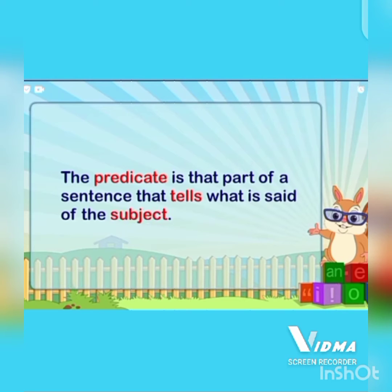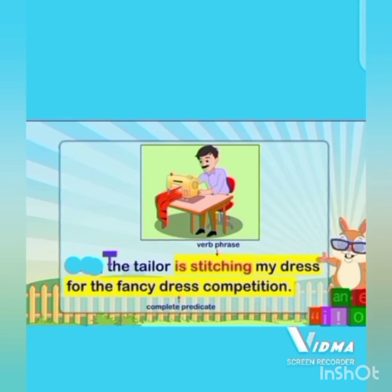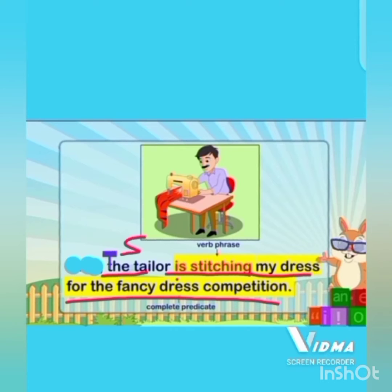The predicate is that part of a sentence that tells what is said of the subject. A complete predicate includes a verb or verb phrase and all the words after the verb. For example: the tailor is stitching my dress for the fancy dress competition. In this sentence, 'is stitching' is a verb phrase, and 'the tailor' — the person who is stitching — is our subject. The verb phrase and all the words that follow it form a complete predicate.